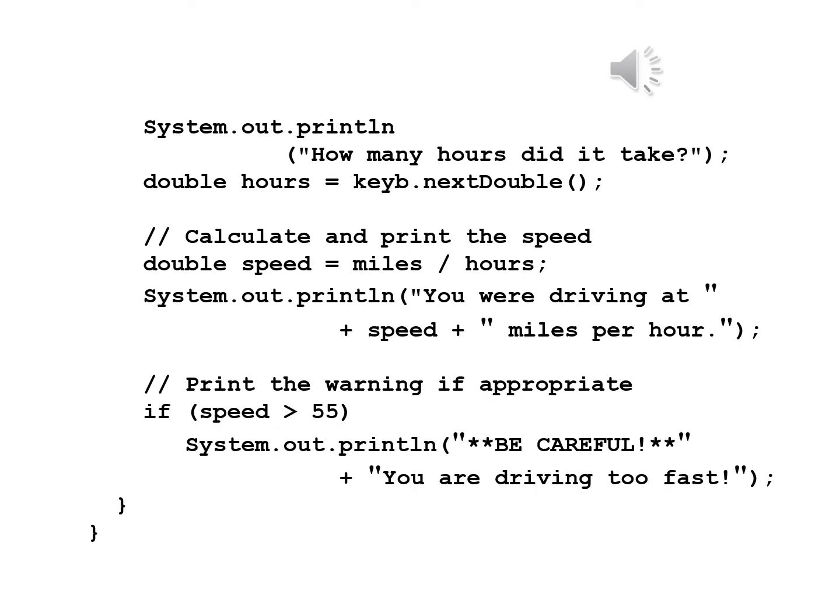Now let's read in the hours. System.out.println 'How many hours did it take?' Then double hours equals keyboard.nextDouble() semicolon. Next, the comment: calculate and print the speed. double speed equals miles divided by hours, semicolon. Then System.out.println with the string 'You were driving at ' plus speed plus ' miles per hour' semicolon.